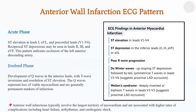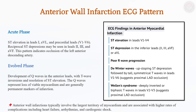Anterior infarction due to LAD occlusion presents with ST elevation in leads V1–V6, lead I, and AVL, with reciprocal ST depression in inferior leads. Over time, Q waves develop and T waves become deeply inverted. Given its extensive myocardial involvement, anterior MI increases the risk of ventricular arrhythmias, cardiogenic shock, and left ventricular failure, necessitating urgent intervention.